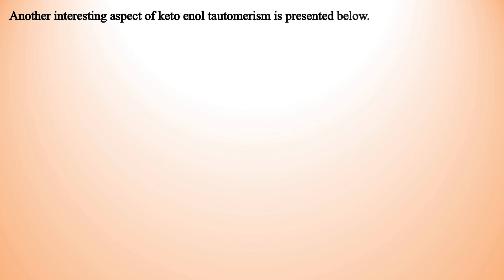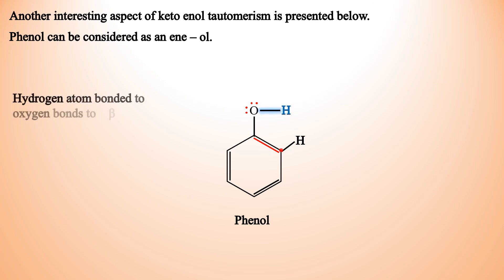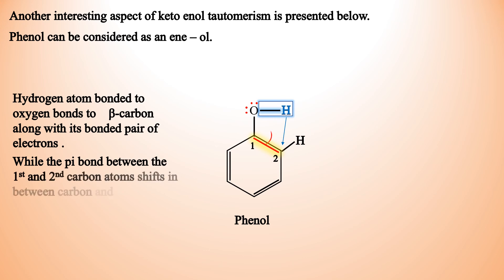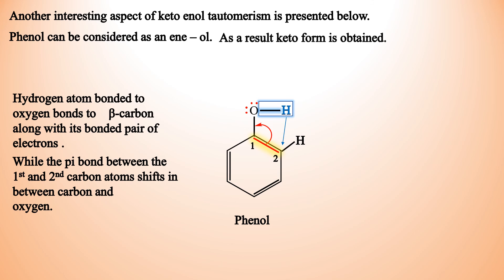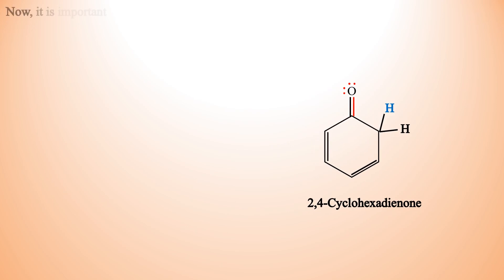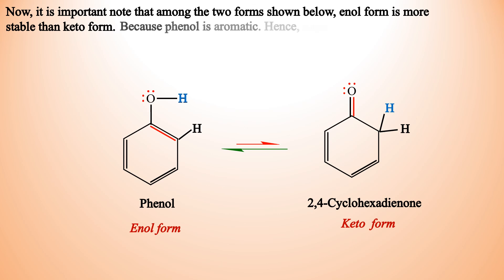Another interesting aspect of Keto-Enol Tautomerism: Phenol can be considered as an enol form. The hydrogen atom bonded to oxygen bonds to the second carbon along with its bonded pair of electrons, while the pi bond between the first and second carbon atoms shifts in between carbon and oxygen, giving the keto form. Here, the enol form is more stable than the keto form because phenol is aromatic, hence more stable.